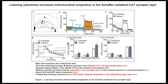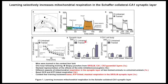In the methods section, they calculate how to derive the basal OCR, ATP-linked, and maximum OCR values, but that was a little bit confusing — I don't understand it 100% perfectly. Anyway, the biopsy was taken from SR/SLM or CA1, CA3 layers.